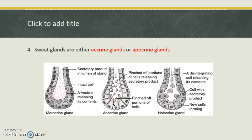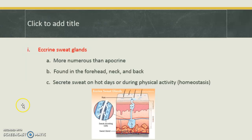Apocrine glands have a part of the cell itself pinched off, which later disintegrates in the ductwork, releasing the sweat further down. Ecrine glands are found in different regions than apocrine ones and are considerably more numerous. You can find ecrine glands in your forehead, neck, or back. These are the ones typically used in response to increased body temperature for cooling via homeostasis, so they're quite active on hot days or during increased physical activity. We can see the coiled tubular region in the dermis with a single duct extending up to a pore at the surface.